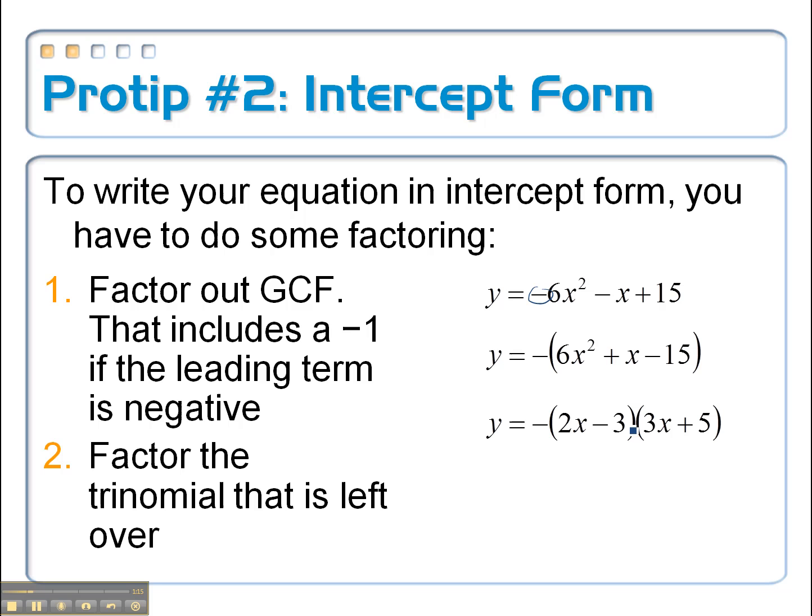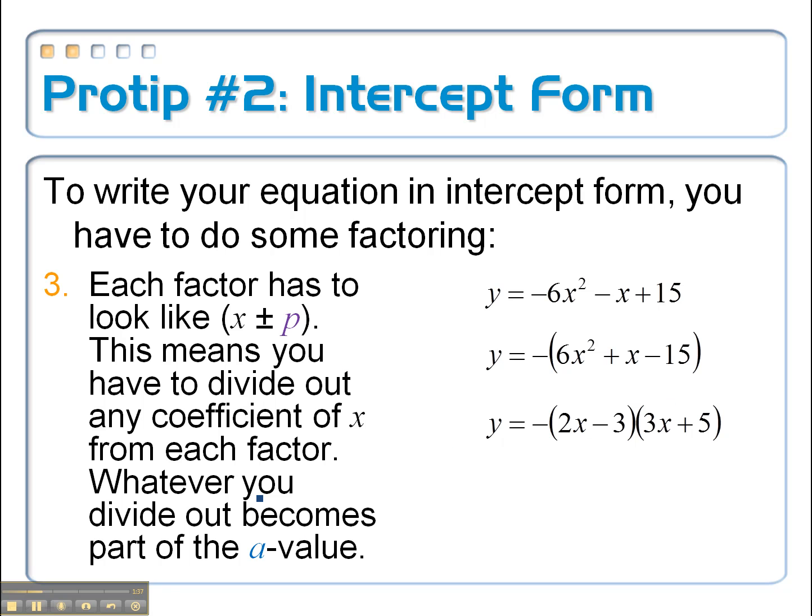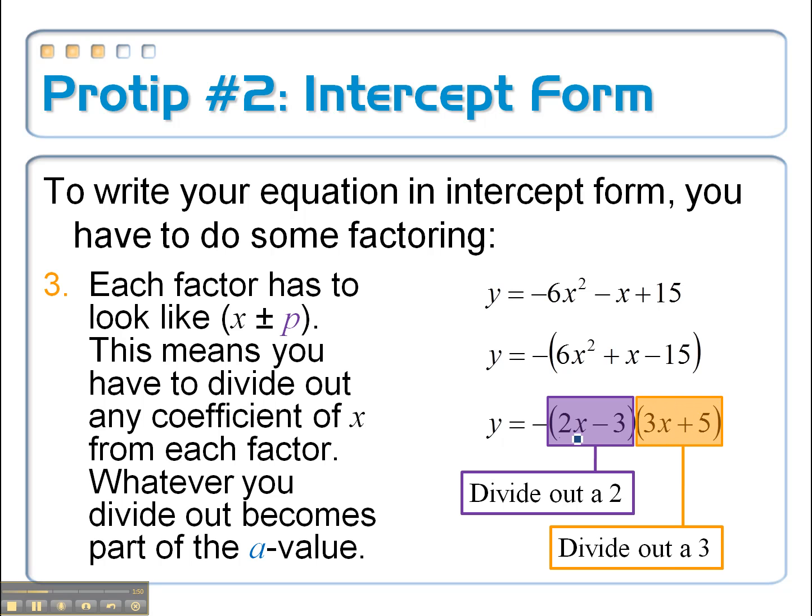Okay, so remember this is supposed to look like y equals x minus p times x minus q, but here I've got a 2 in there and I've got a 3 in there, which I can't have. They have to be a coefficient of 1, which is why we're going to have to divide each of these out. So on this first one, we're going to have to divide out that 2. On the second one, we'll have to divide out that 3. And when I do that, I factor out the 2 and I factor out the 3. 2 times 3 gives us the 6 value. That's our original a value. When you're all done, the a value should be the same no matter if it's in intercept form, vertex form, or standard form.